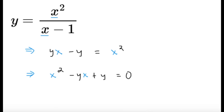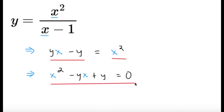First, let's just clear the denominators. Let's multiply both sides by x minus 1. The left side becomes y squared minus y, and then the right-hand side just becomes x squared. Then let's move everything to one side. We're going to get that x squared minus yx plus y equals 0. I highlighted the x's with blue so that we can see that this equation is technically a quadratic equation in x.